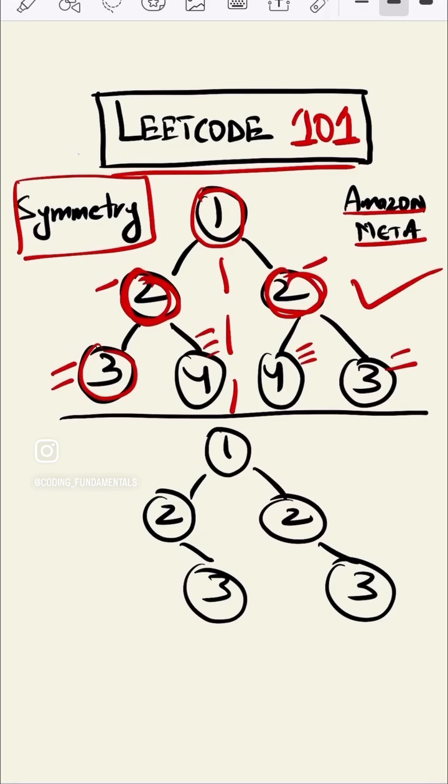So this is a valid symmetrical binary tree. If we check this tree here, we can see that the right of this node is equal to the right of this one, but it should be to the left. Hence this is...